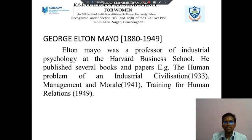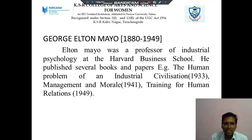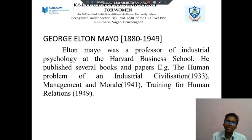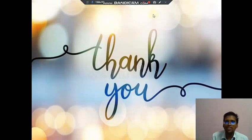Elton Mayo lived from 1882 to 1949. He was a Professor of Industrial Psychology at Harvard Business School. He published several books and papers, for example Human Problems of Industrial Civilization in 1933, Management and Morale in 1941, and Training and Human Relations in 1949. Thank you for watching this video.